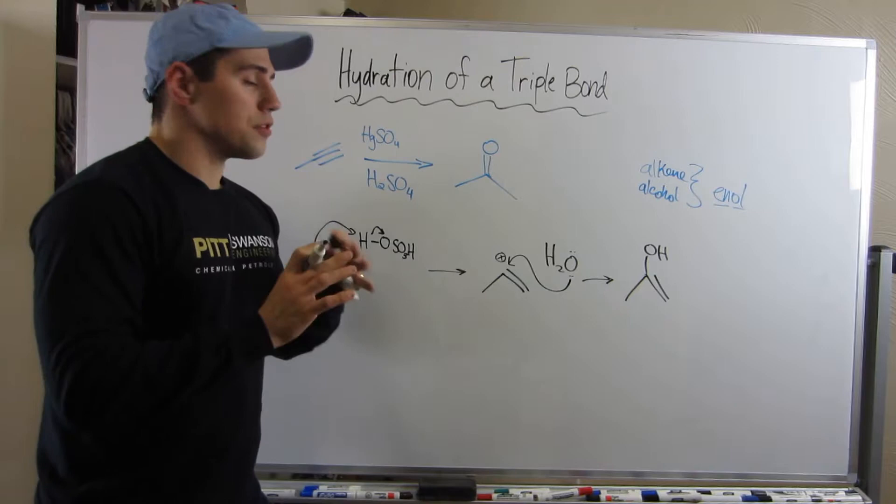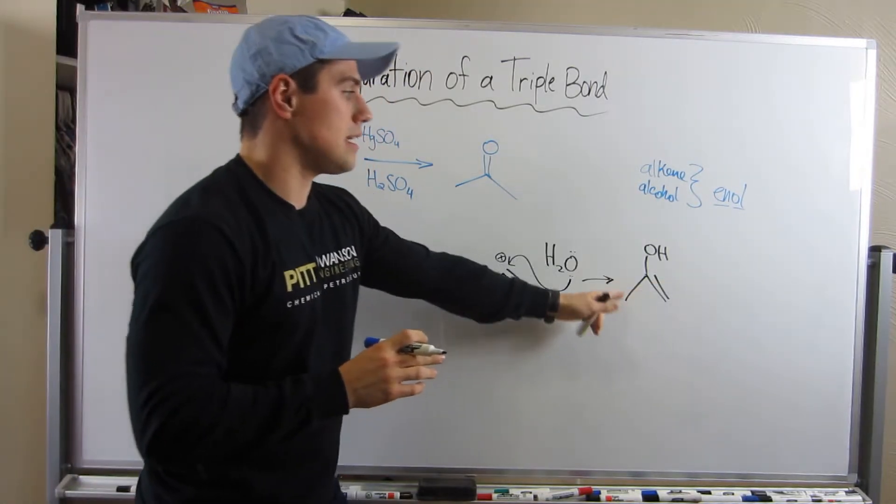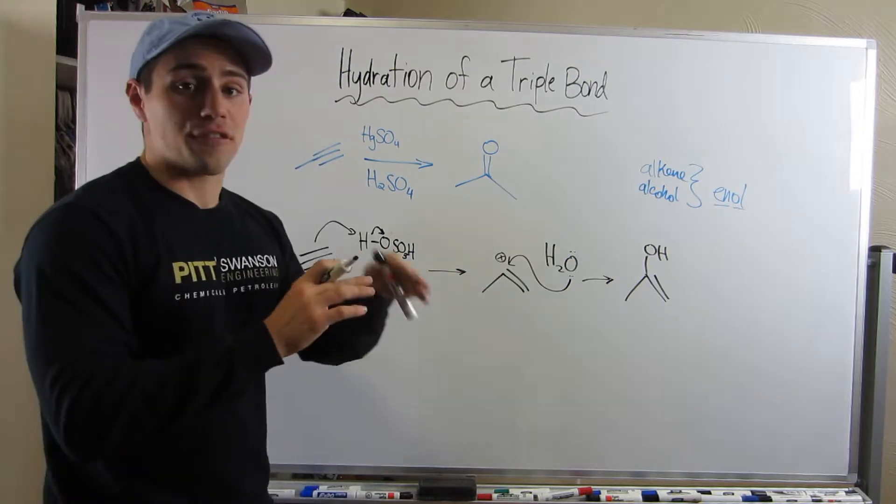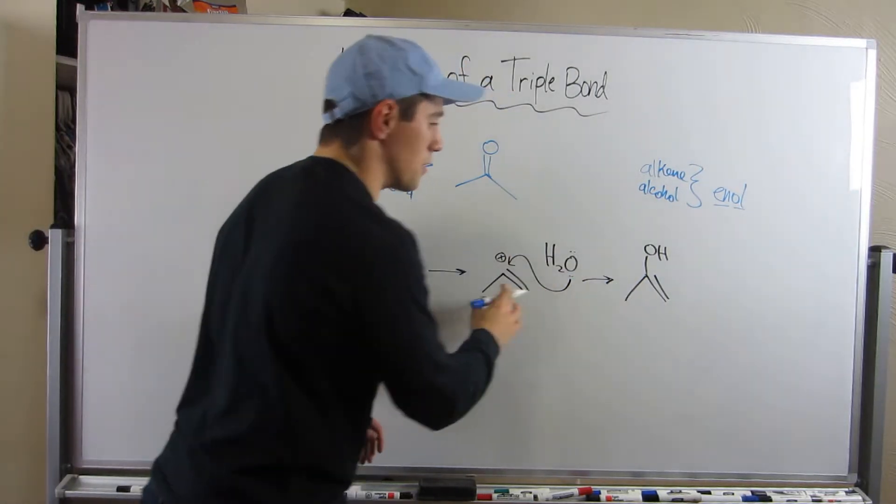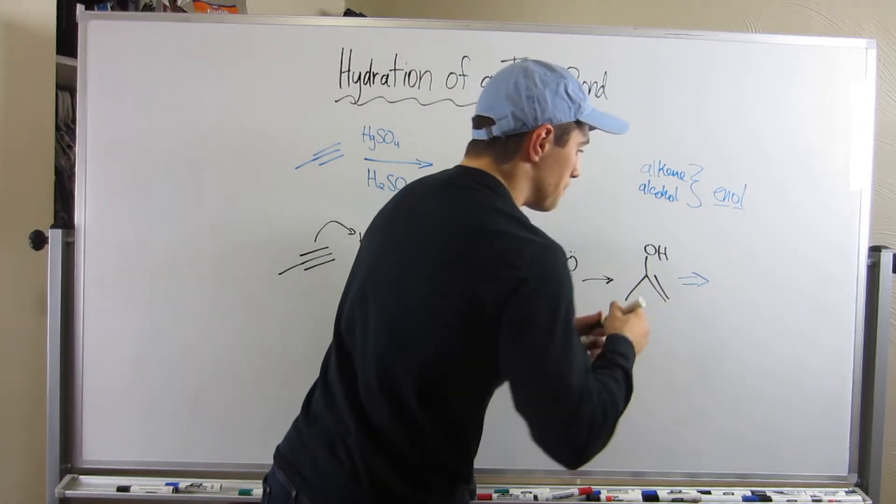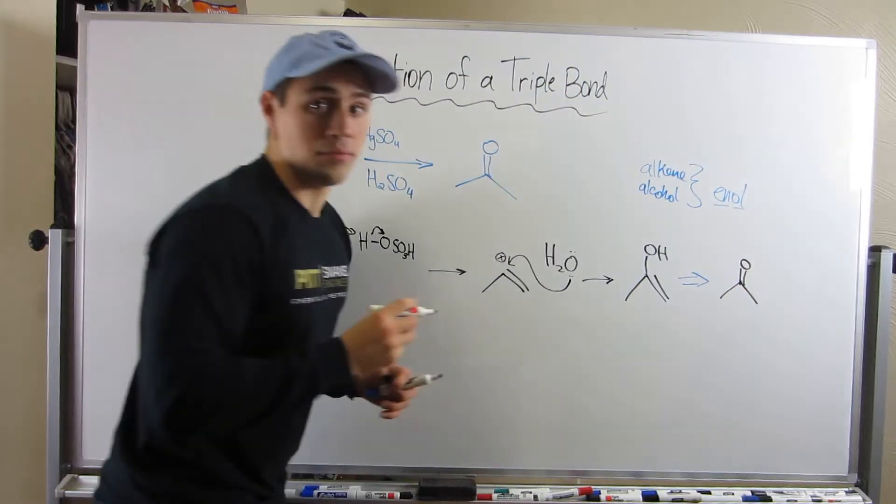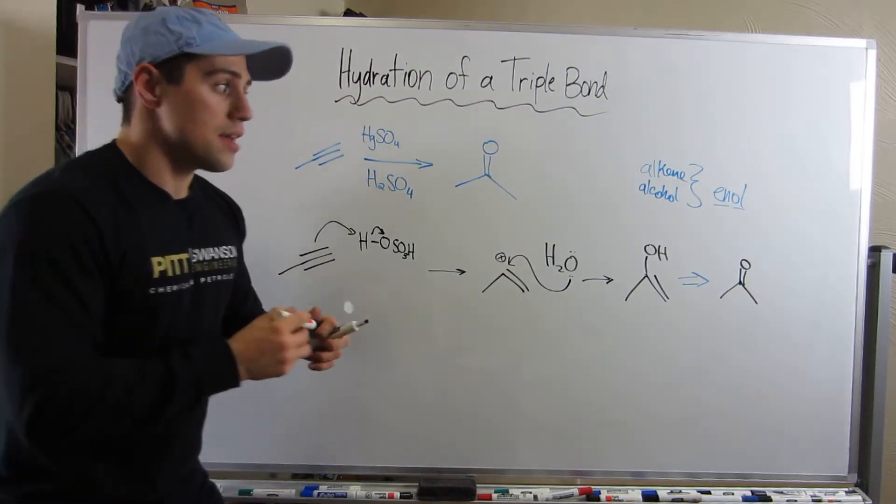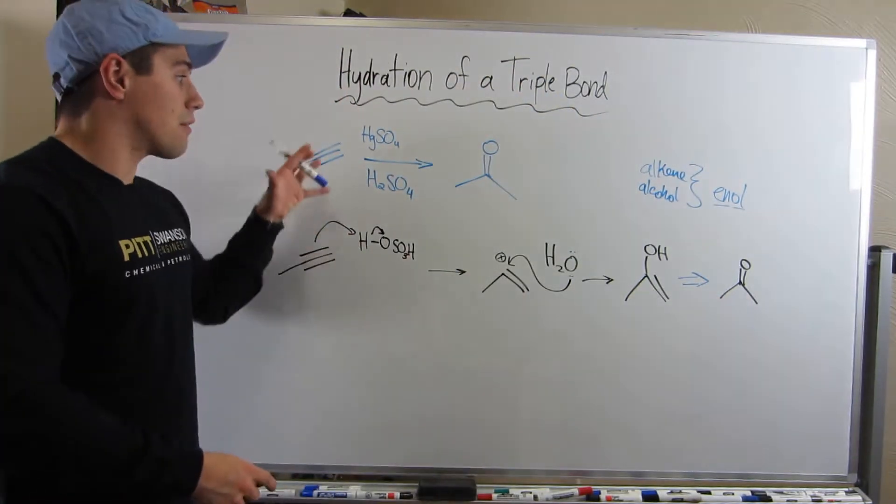flip to whatever carbonyl they can. In this case, since we're in the middle of the chain, this actually flips directly to the ketone. Again, I'll explain this in the next video, but you'll see how the